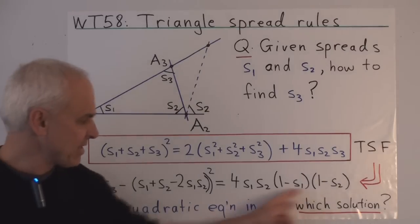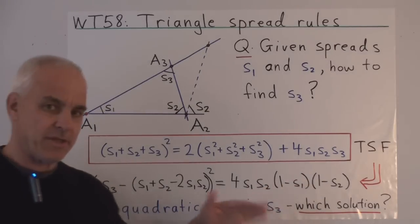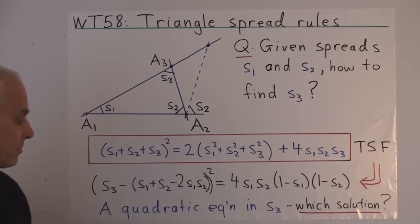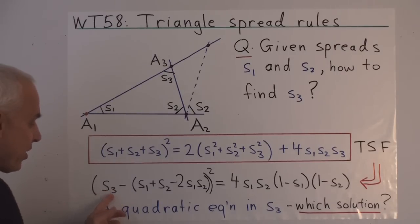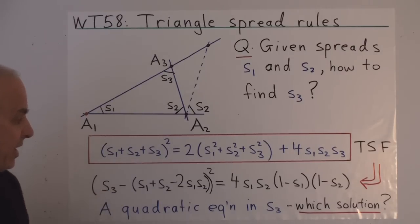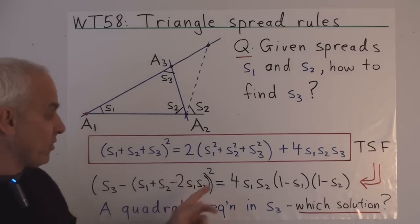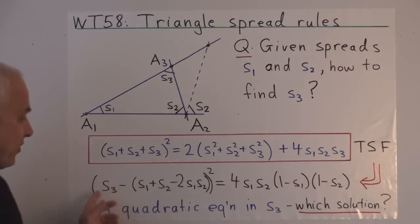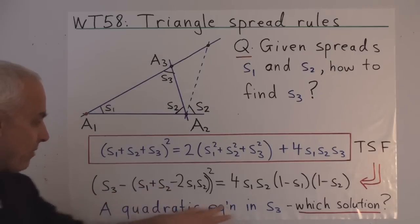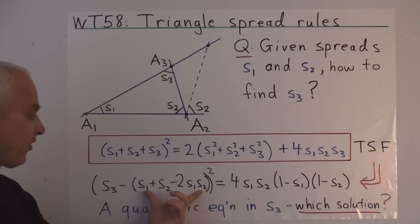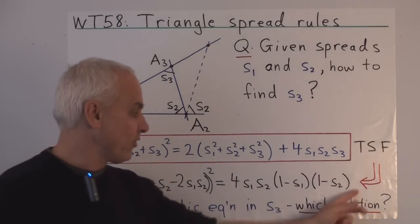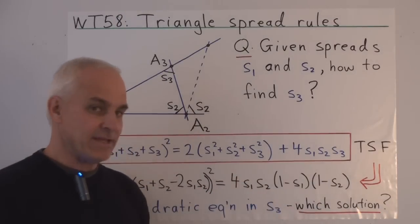That's a very pleasant kind of expression that occurs quite a lot in rational trigonometry. This form is a quadratic equation in S3, and to solve it you would take the square root of both sides, so S3 equals this quantity here plus or minus the square root of the right-hand side.